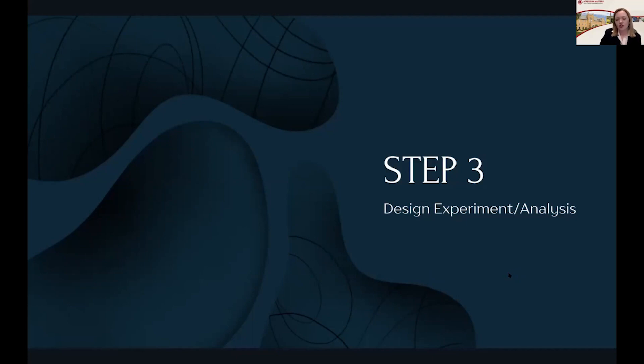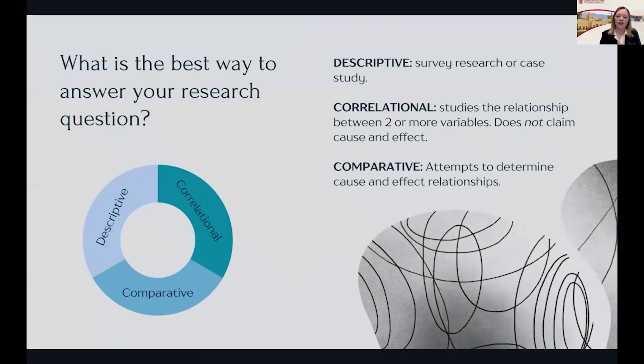Step three: the experimental design and analysis. What is the best way to answer your research question? There are three different general types of research and they're going to give you very different kinds of data.